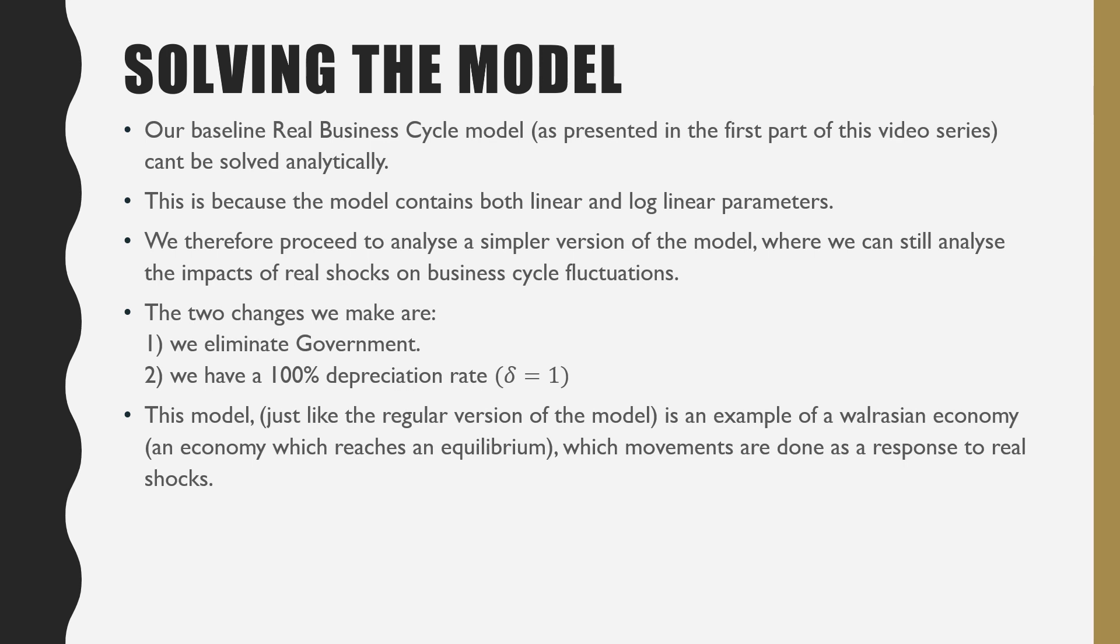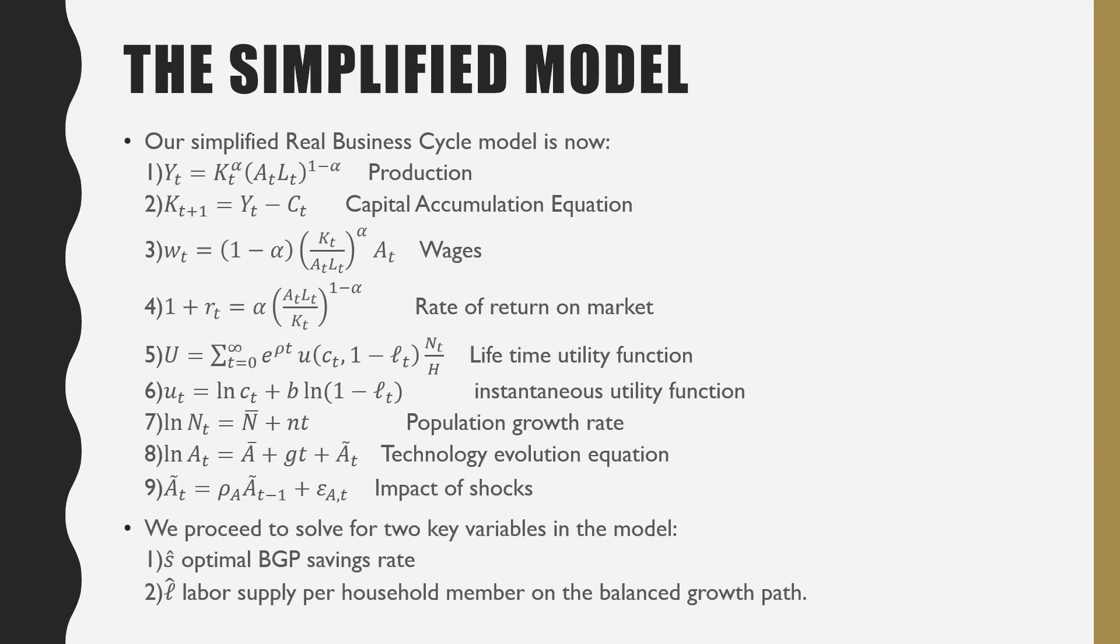This model, just like the regular version of the model where we don't have these two specifications, is an example of a Walrasian economy, meaning that it's an economy which reaches an equilibrium where movements are done as a response to real shocks in the model. So our simplified real business cycle model is now defined as this list over here where we have equations one to nine.